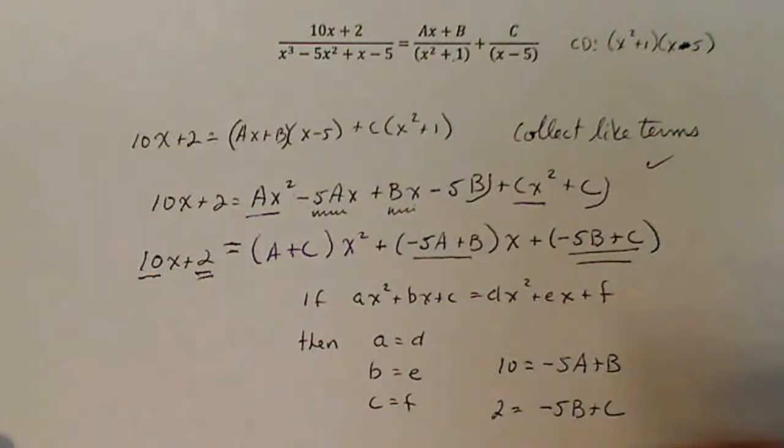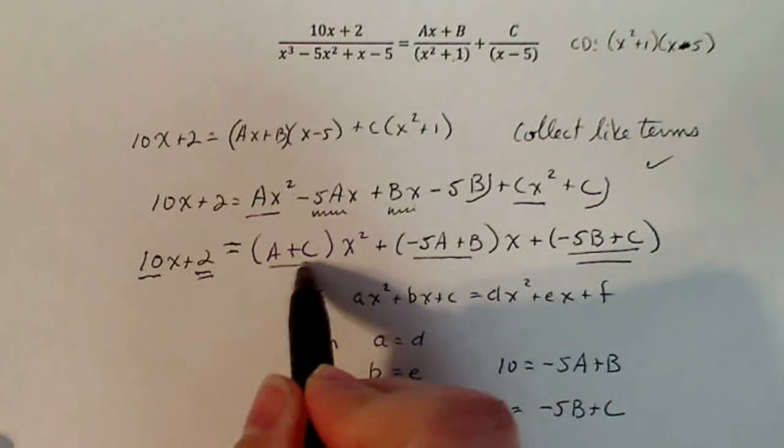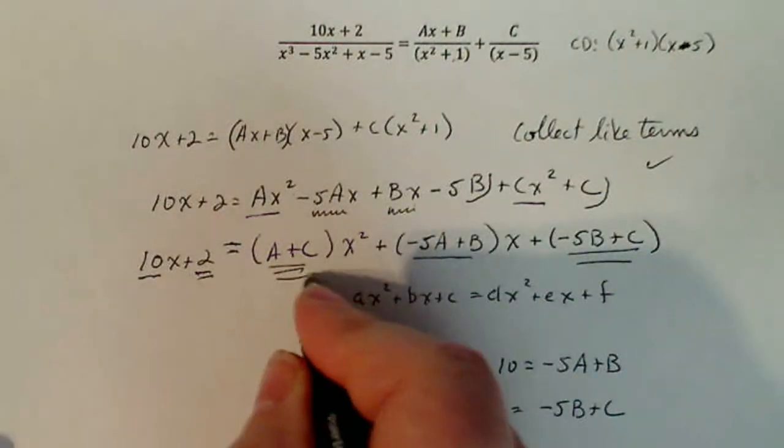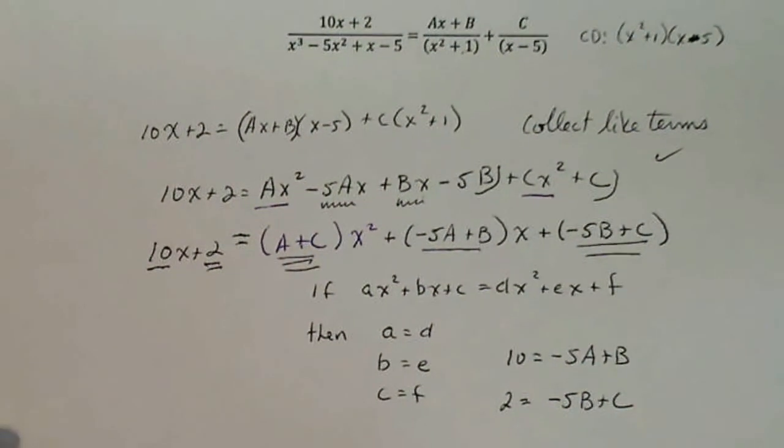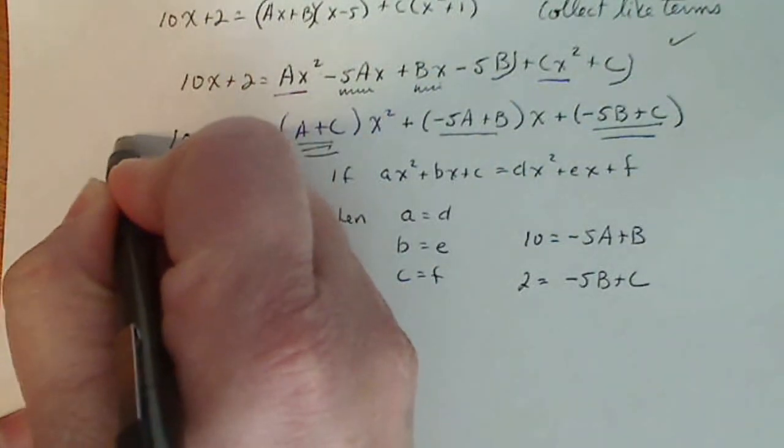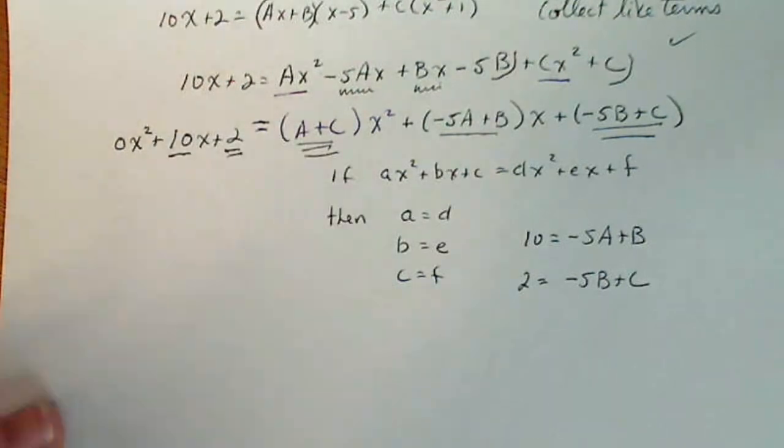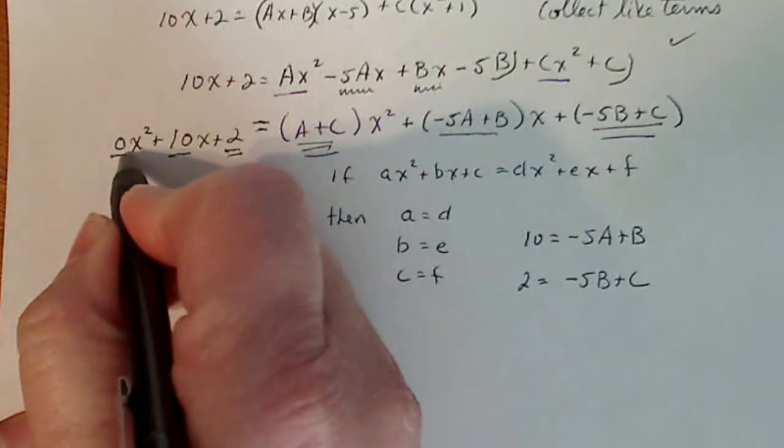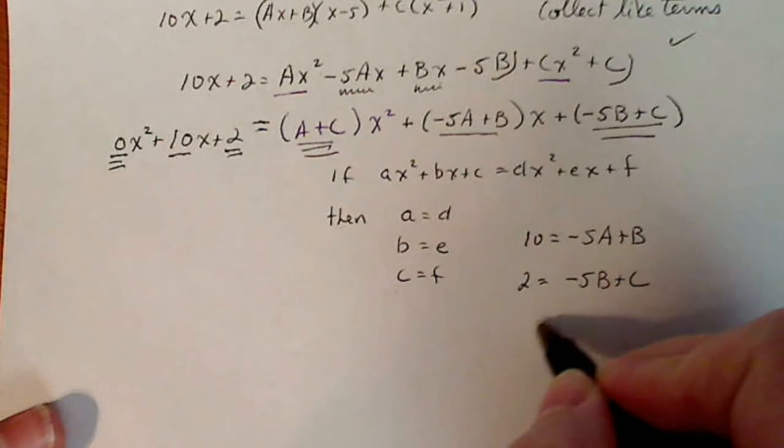But I don't have anything over here on the left for a plus c. So what do you think I do? Well, technically, can't I write zero x squared over here? Isn't that legal? I mean, really? We just don't write it because it's zero, but that's totally true. So that means that zero is equal to a plus c.